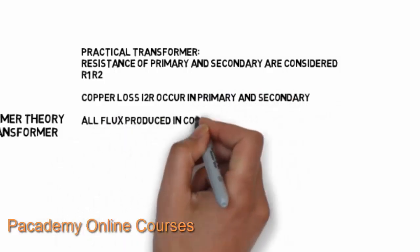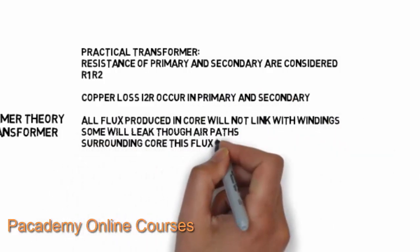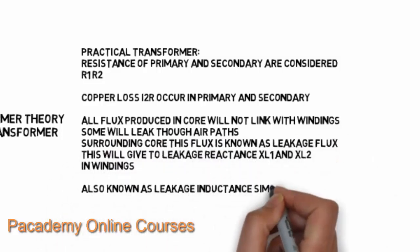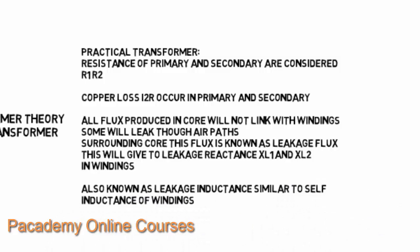In a practical transformer, we consider the resistance of the primary and secondary windings as R1 and R2. Copper losses, or heating losses, will occur in the windings. Also, not all flux produced in the core will link with both windings — some flux leaks through air paths and surrounding core. This is known as leakage flux, and it gives rise to leakage reactance XL1 and XL2, similar to the self-inductance of the windings.